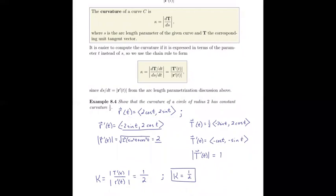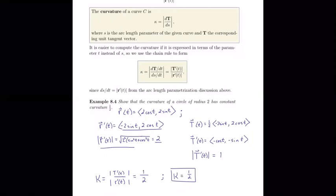Next we'll need R prime of t for the formula. So this is the calculation for R prime of t. Then the magnitude of R prime of t, squaring both of the x and y components, taking the square root of that. And through a Pythagorean identity we end up with 2 at the end of this.